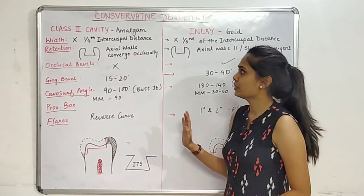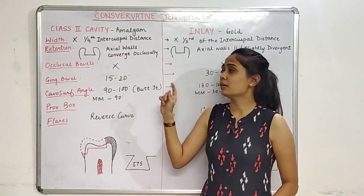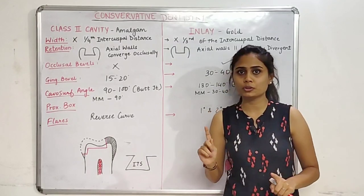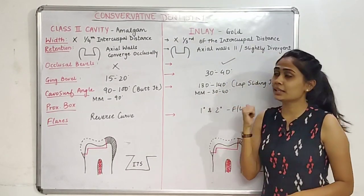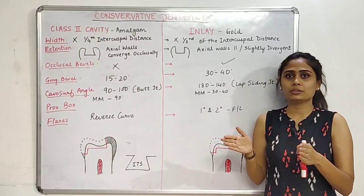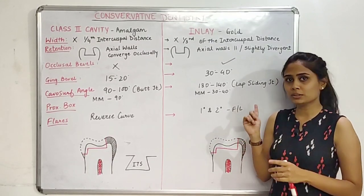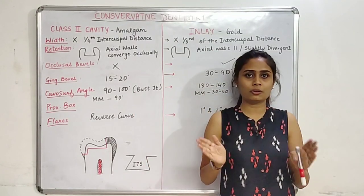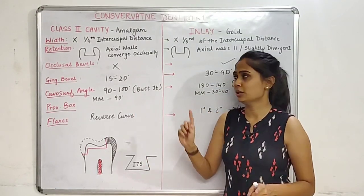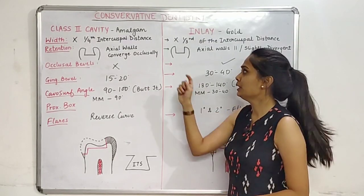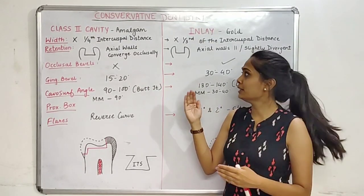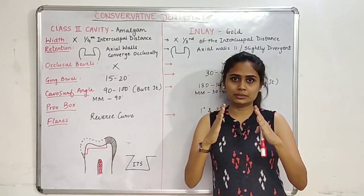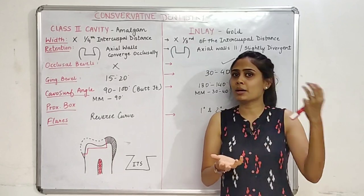The width of the Class 2 cavity for amalgam should not be greater than one-fourth of the intercuspal distance, whereas the inlay cavity width should not be more than one-third of the intercuspal distance. For retention, there are two types — primary and secondary. The primary retention for the Class 2 cavity is gained by the axial walls which converge occlusally, so that the amalgam doesn't come out.